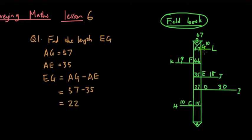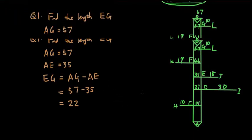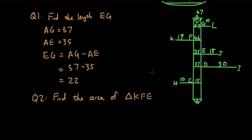That gives us 57 minus 35, which is 22 meters. So that is the distance from E to G.